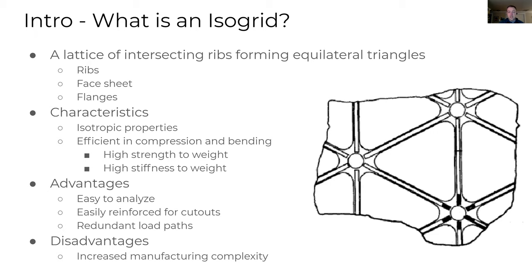You don't have to model the little details in the material. It's basically like making a plate into an I-beam where you've got this efficient distribution of material, so it's very efficient in both compression and bending. That gives you a high strength-to-weight and high stiffness-to-weight ratio — which is what we mean by efficient for rockets and aircraft. The advantages: it's easier to analyze because you don't have to make a full finite element model of the whole thing.